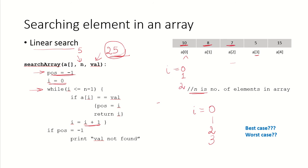Again, check — no, it is not equal. So i becomes 3. Again, I am checking — it is not equal. So i becomes 4. And again, I am checking — it is not the same. So i becomes 5. As soon as i becomes 5, this condition is not satisfied and I am out of the loop.